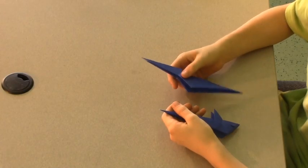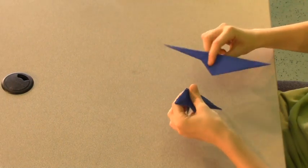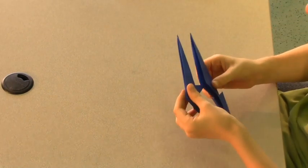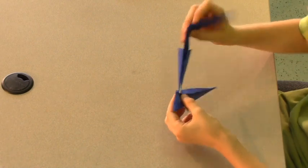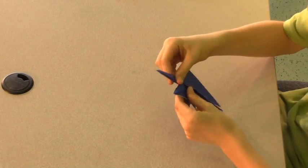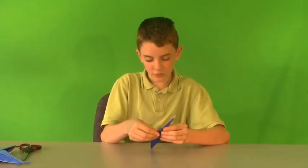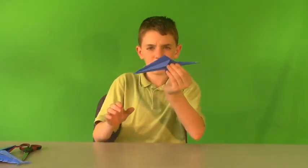Once we have that done, we want to take our other part of our swordfish and we want to simply put them together. One the fin part inside the other and make sure you keep those little clasps on the inside of your swordfish. So that we have a nice thing here.